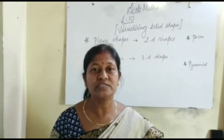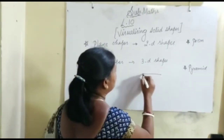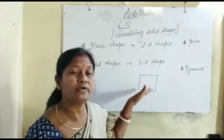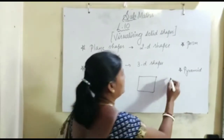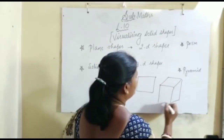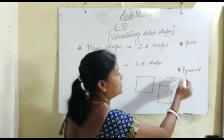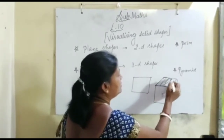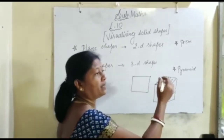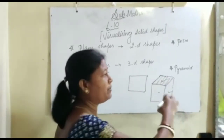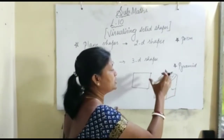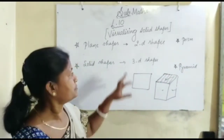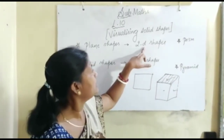Now one question comes to your mind: what is the difference between 2D shapes and 3D shapes? 2D shapes lie on a surface; they cannot be transferred or shifted from one place to another. For example, if this is a cuboid, the individual faces are called 2D shapes, whereas the entire solid shape is the cuboid. Each face is a plane shape and as such that plane shape cannot be picked from one place and kept in another — we have to transfer the entire solid shape.